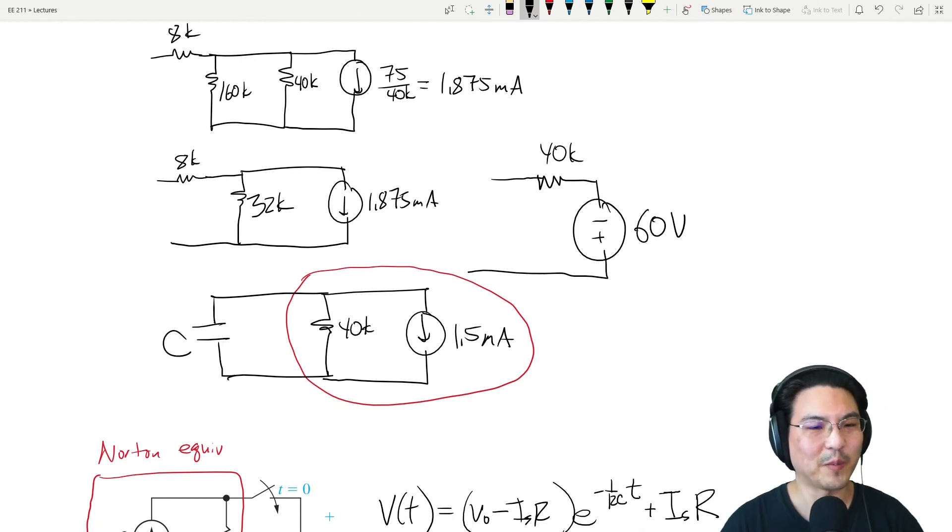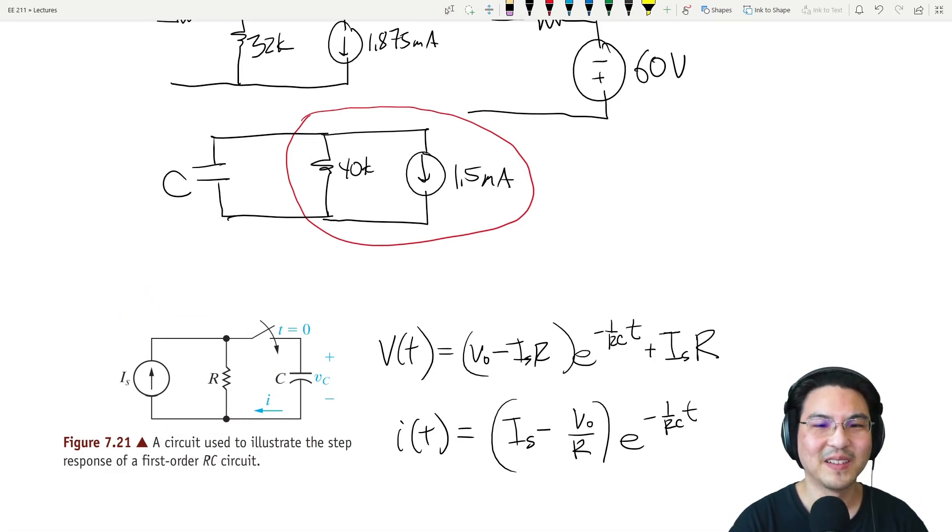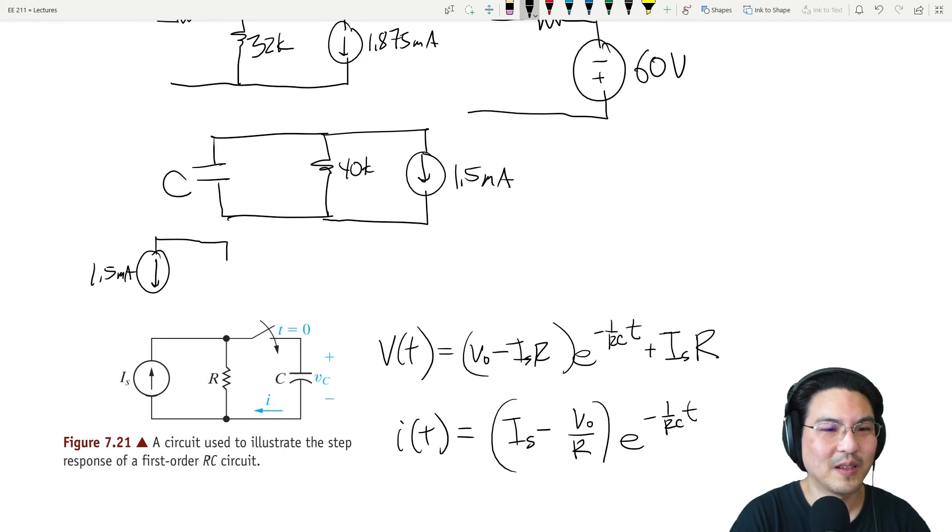The 0.25 microfarad capacitor. Now it totally looks like this and we just have to rearrange a little bit: 1.5 milliamp source, 40k resistor, and our 0.25 microfarad capacitor.